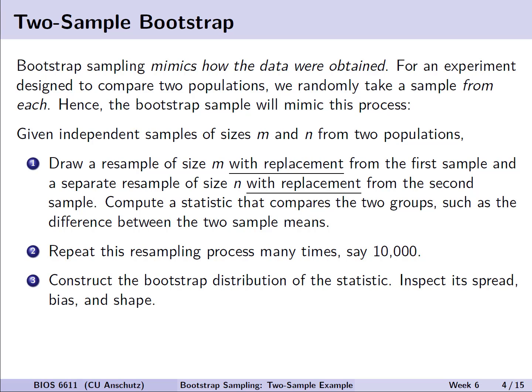We will then compute a statistic that compares the two groups, for example, maybe the difference between two sample means. Like before, we will repeat this process of resampling many times, such as 10,000, and we'll then construct the bootstrap distribution of our statistic of interest and inspect things like its spread, bias, and shape, or potentially calculating confidence intervals.